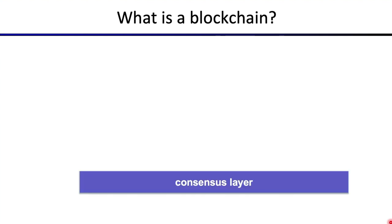So let's talk about what a blockchain is. In my mind, a blockchain is made up of four separate layers — or levels. The bottom layer is what's called the consensus layer, and this is what's used for the parties to coordinate and agree on the current state of the chain.